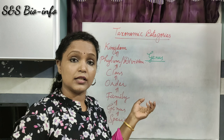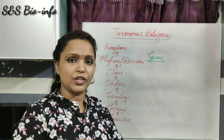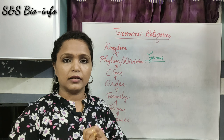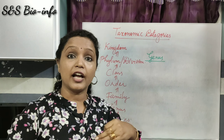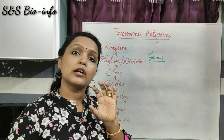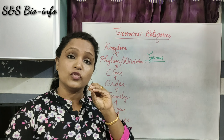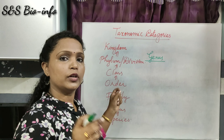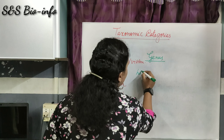The next taxonomy category is Genus. Genus comprises a group of closely related species. For example, the animals lion, tiger, and leopard are closely related animals with some common similar features — they are closely related species and come under the same genus Panthera.